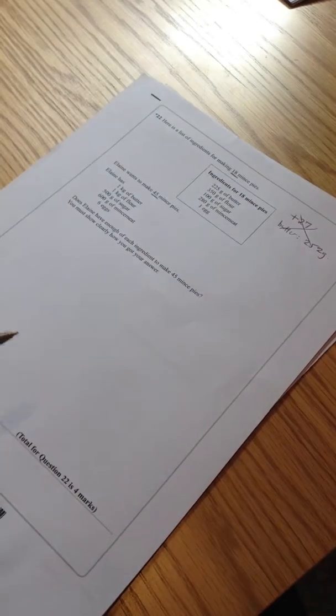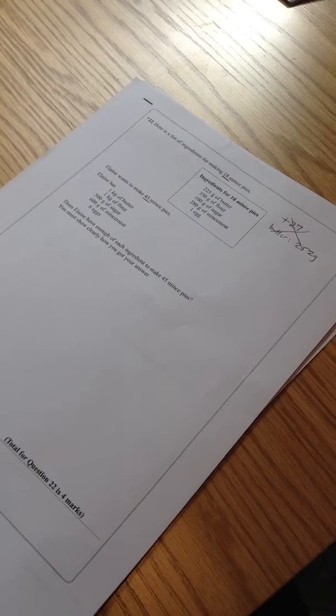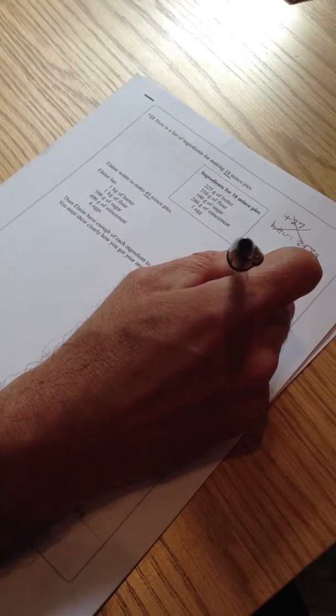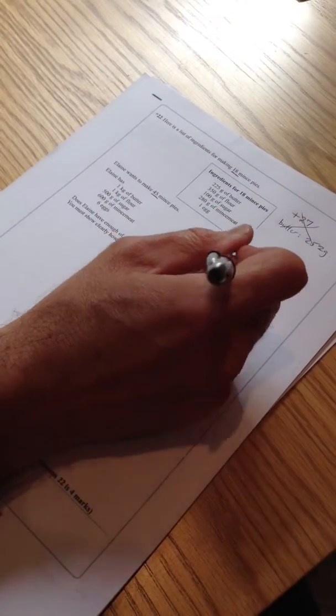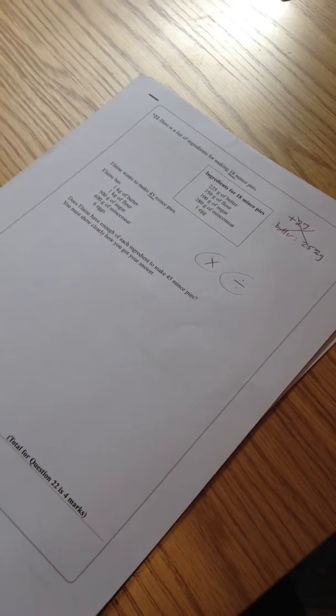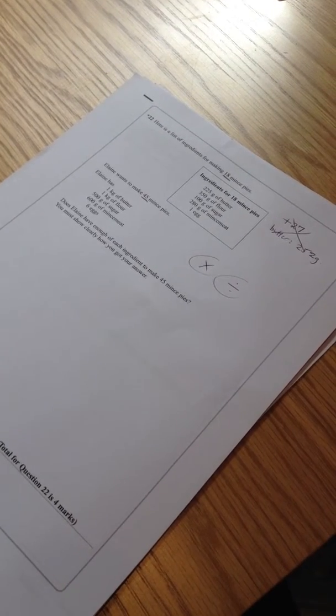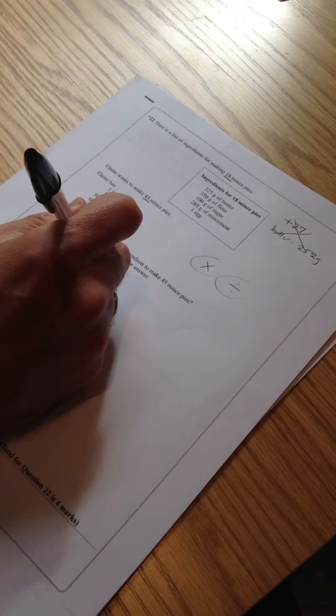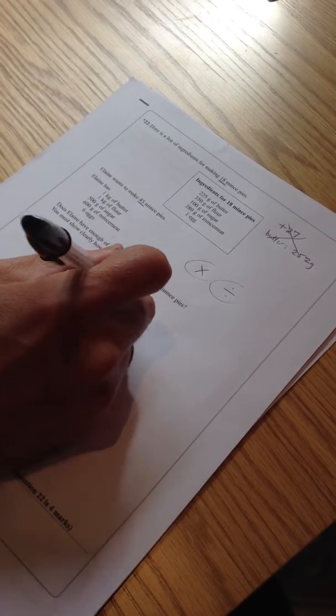And these questions that involve the ingredients normally involve ratio and proportion, which means you need to start thinking about multiplication and even sometimes division as well. So they're the two main things we need to think about. So she's going from 18 mince pies to 45. I need a scale factor. I need to know what do I times 18 by to get 45.